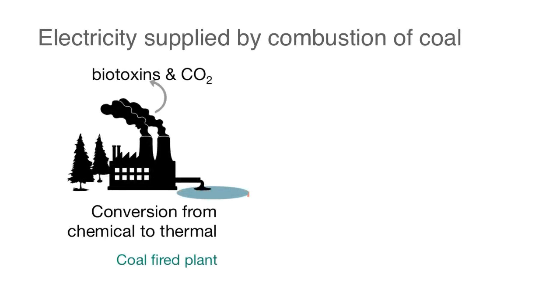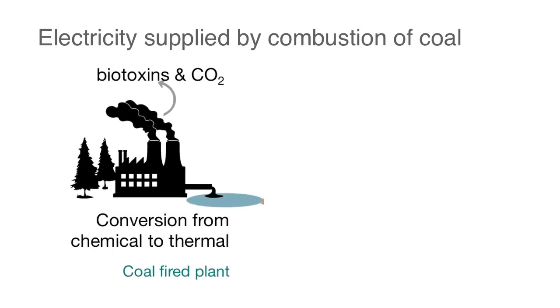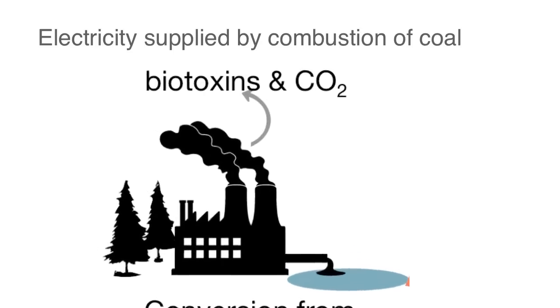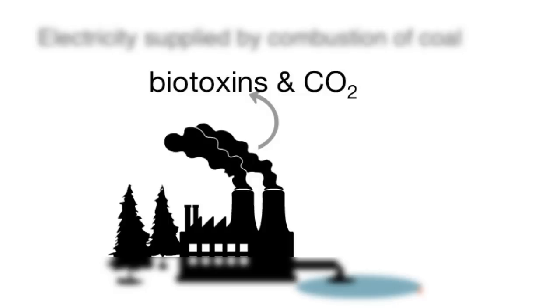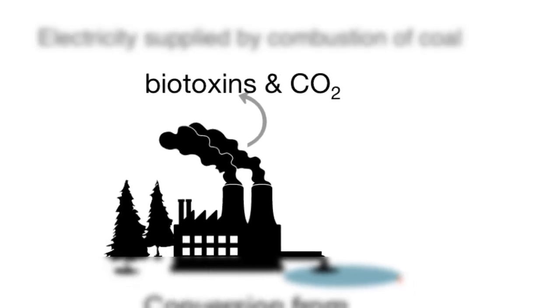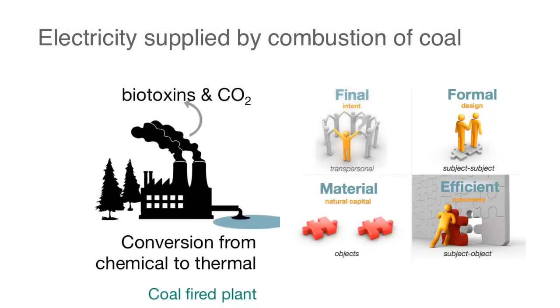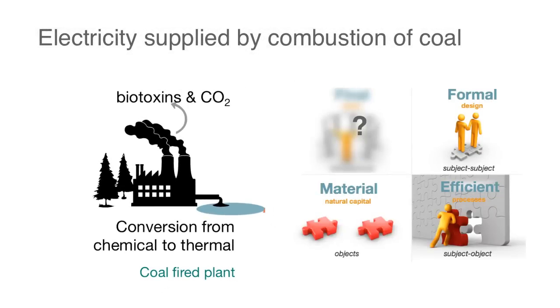Here's an example. In the United States, the majority of electricity is generated through burning coal. At some point, engineers designed the system to provide the needed electricity. However, what was missed in the designing of the system is that burning coal results in a constant stream of biotoxins emitted to air, water, and land. Was it the intent of the designers to poison living beings? Most likely their intent was to create a reliable source of electricity.